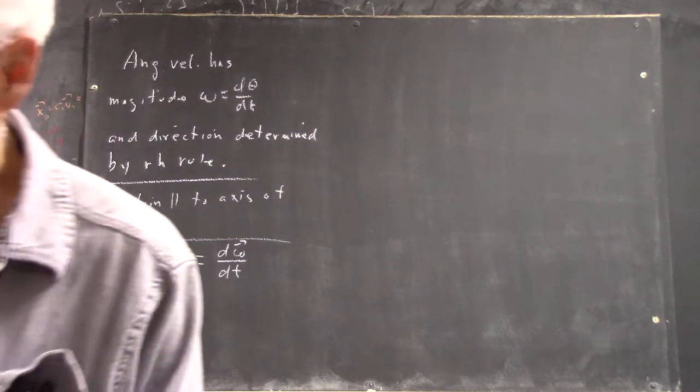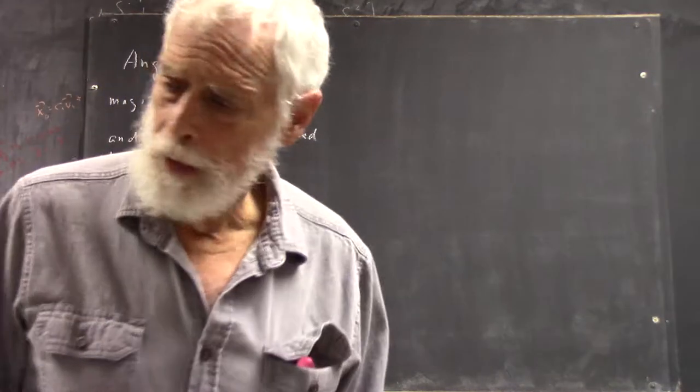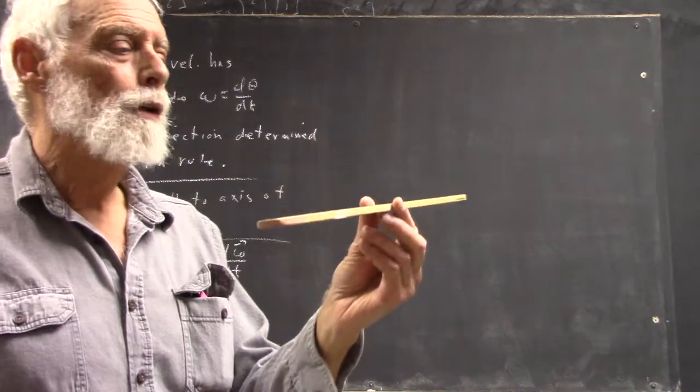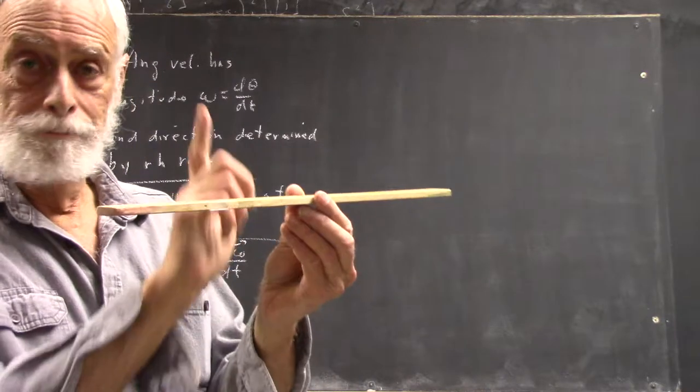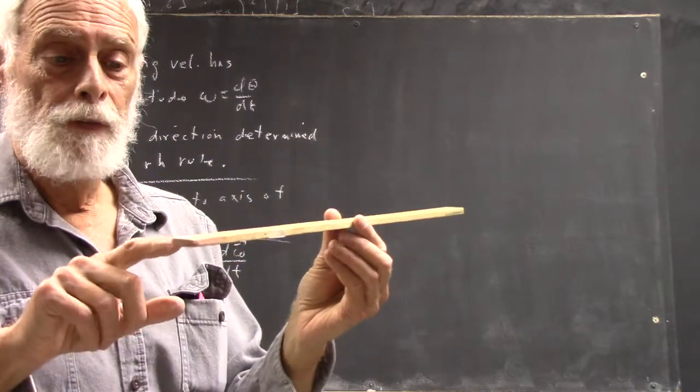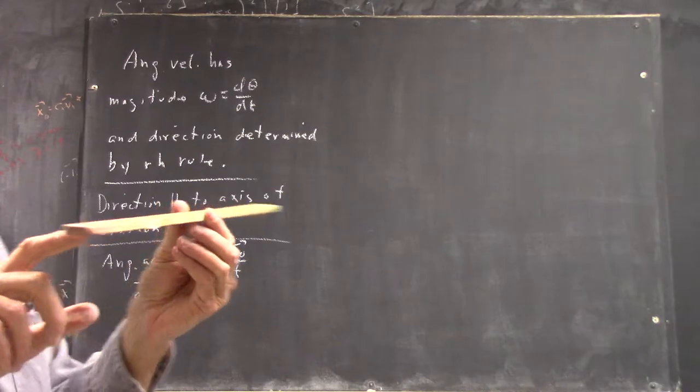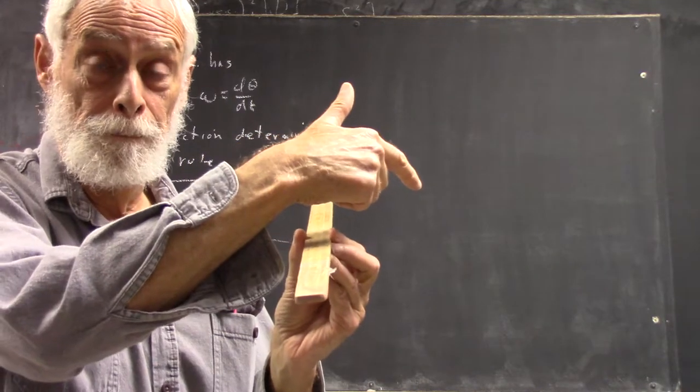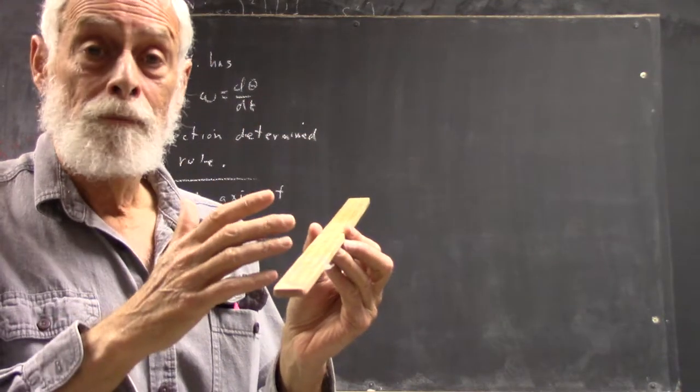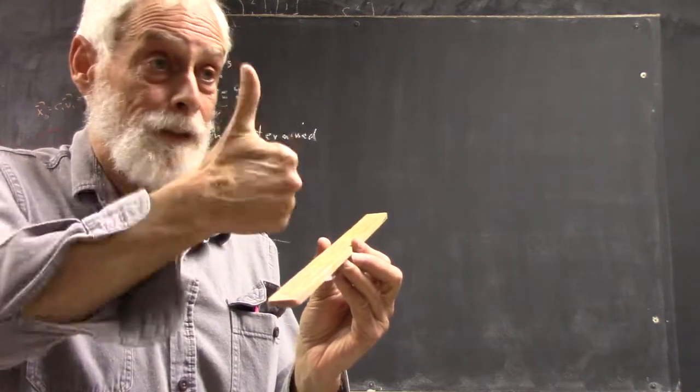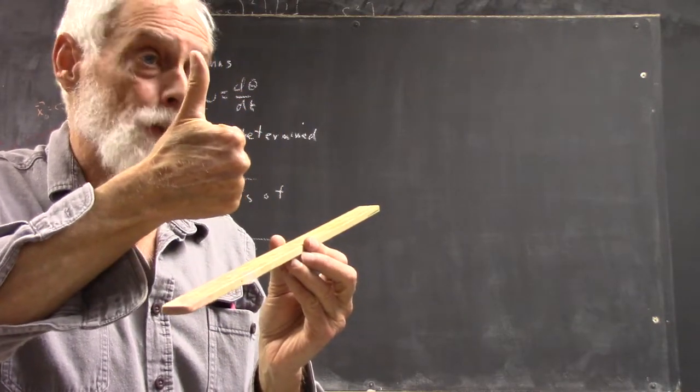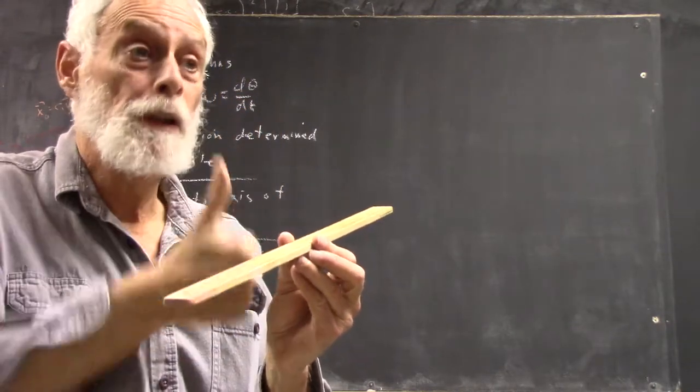Now, torque. Easier to illustrate torque with a beam, like this meter stick here, rotating about this point, in this plane. If I exert a force on this thing, it tends to accelerate it in this direction. If it stays in this plane, so that the angular velocity remains in this direction, then the acceleration also has to be in this direction. Because the change in angular velocity will be in this direction, right?